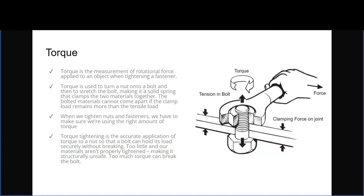Torque is the measurement of the rotational force applied to an object when tightening a fastener. Torque is used to turn a nut onto the bolt, which allows the bolt to stretch — making a solid spring that clamps two materials together so they can't come apart if the clamp load remains greater than the tensile load. When we tighten nuts and fasteners we have to make sure we're using the right amount of torque; torque tightening is the accurate application of torque to a nut or bolt so it can hold its load securely without breaking. Too little and materials aren't properly tightened; too much and it can break very easily.